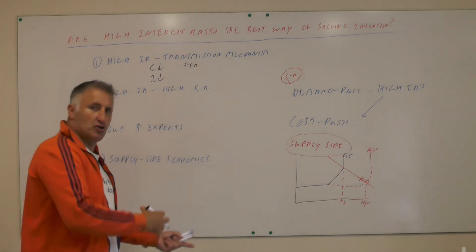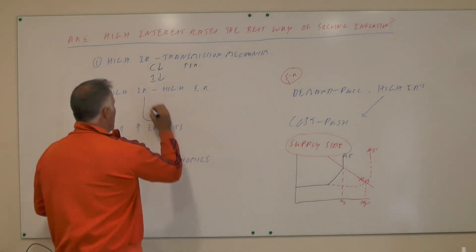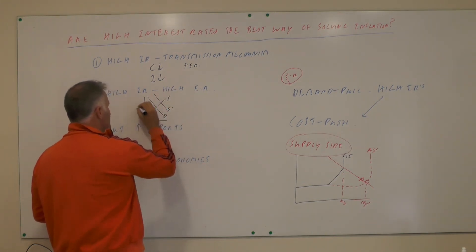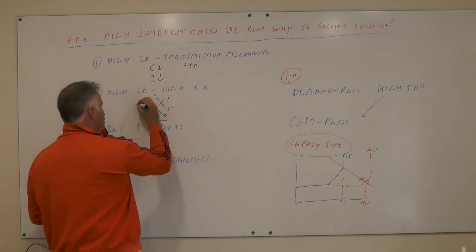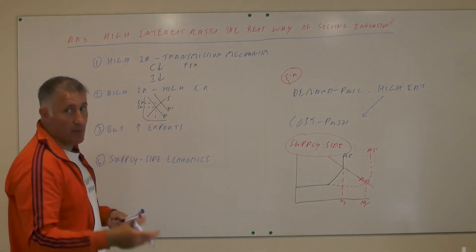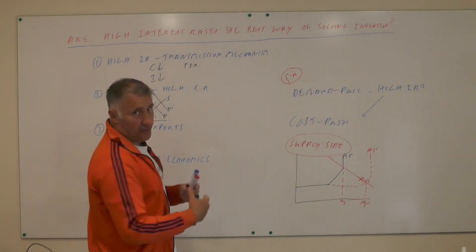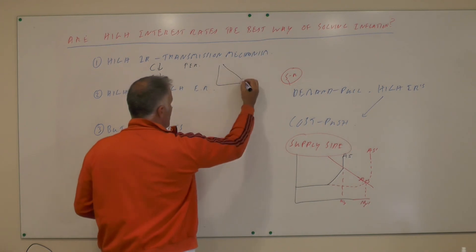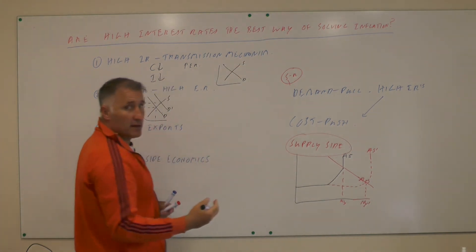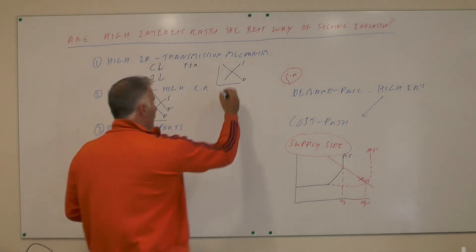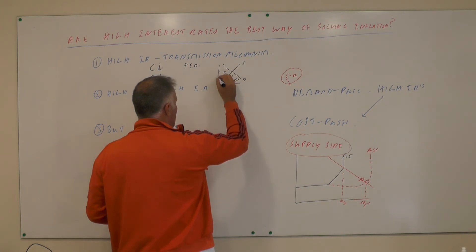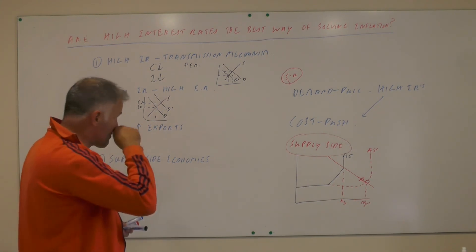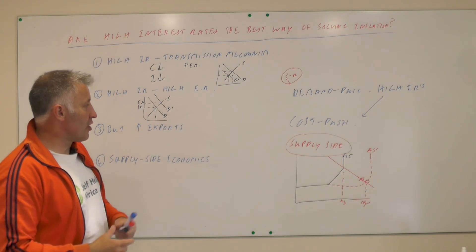High interest rates will also make the exchange rate go up, because hot money comes into the UK, increasing demand for sterling, so the UK exchange rate rises. House prices are the fourth part of the transmission mechanism — it becomes more expensive to borrow money to buy a house, so demand for housing falls and house prices fall. That has a big impact on people's wealth, so they spend less money — high interest rates reduce aggregate demand in the economy.